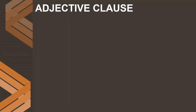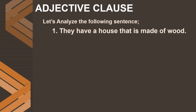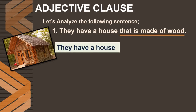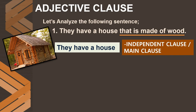Now we shall see the first one — the adjective clause. Let's analyze the sentence: 'They have a house that is made of wood.' In this sentence, 'they have a house' has a subject 'they' and predicate 'have a house.' It can stand on its own and does not require anything to complete it. Therefore, this is called an independent clause or a main clause.